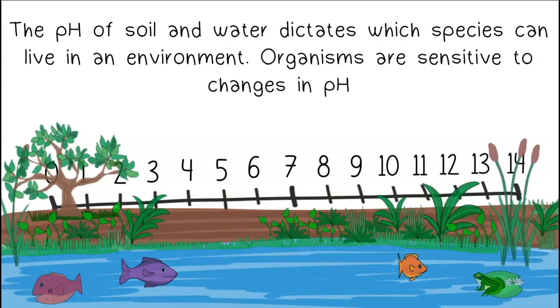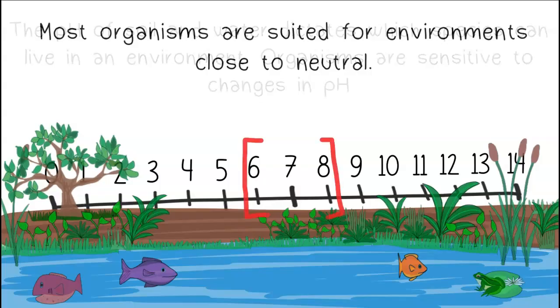The pH of soil and water dictates which species can live in an environment. Organisms are sensitive to changes in pH. Most organisms are suited for environments close to neutral.